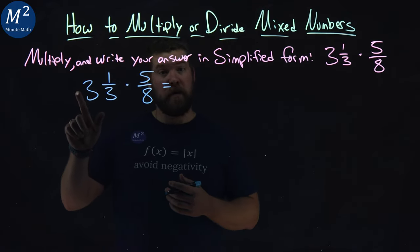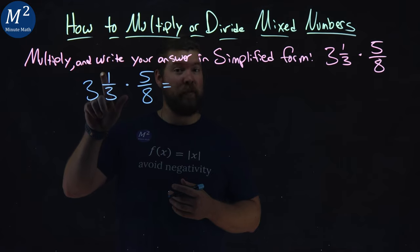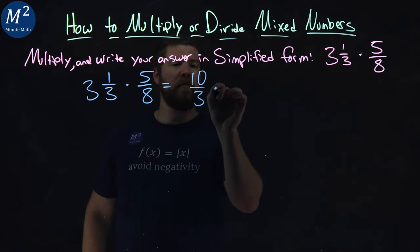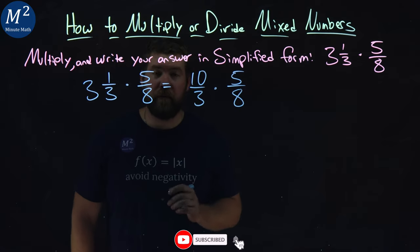Three times three is nine, plus one gives me ten. So I have ten-thirds here multiplied by five-eighths.